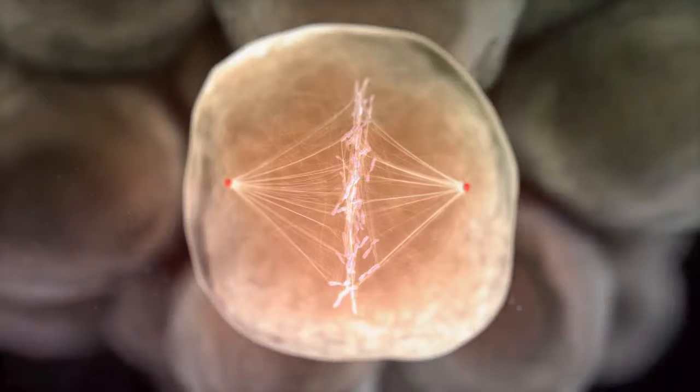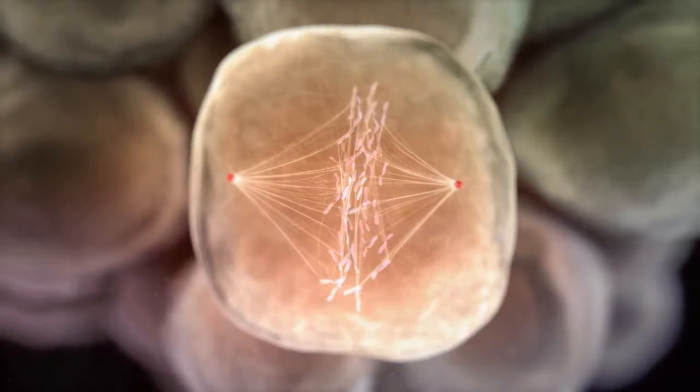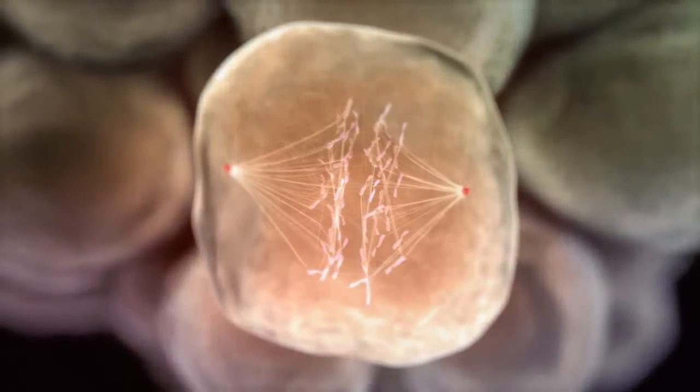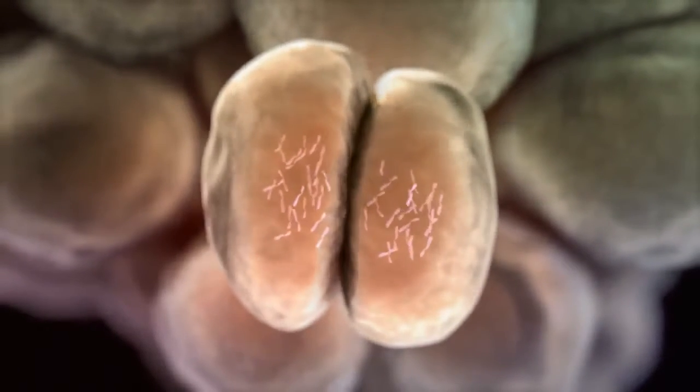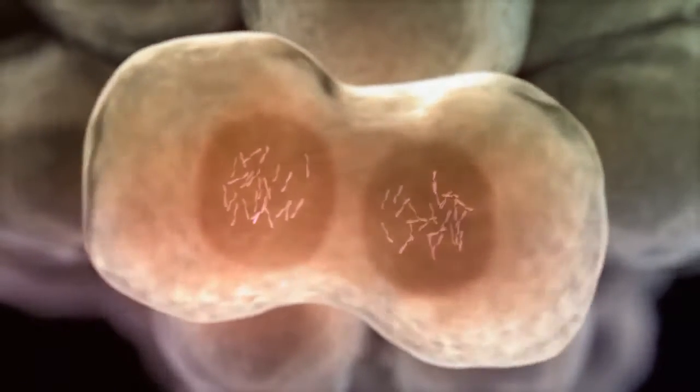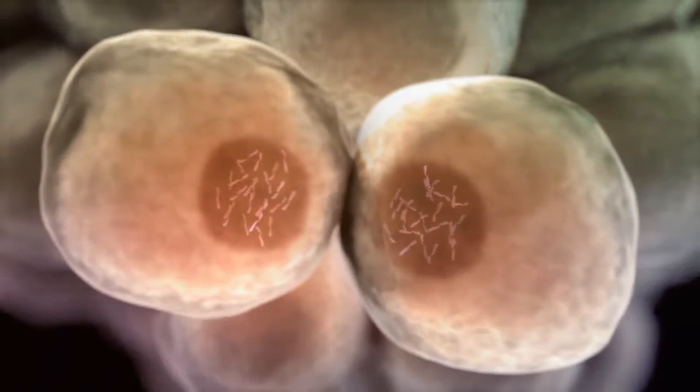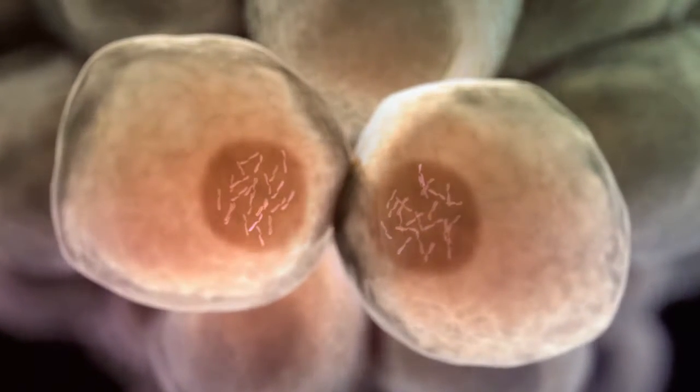The centrioles begin to play a game of tug-of-war, breaking the chromosomes. Since the separated strands of DNA are identical, each new nuclei that forms contains an exact copy of the original DNA.